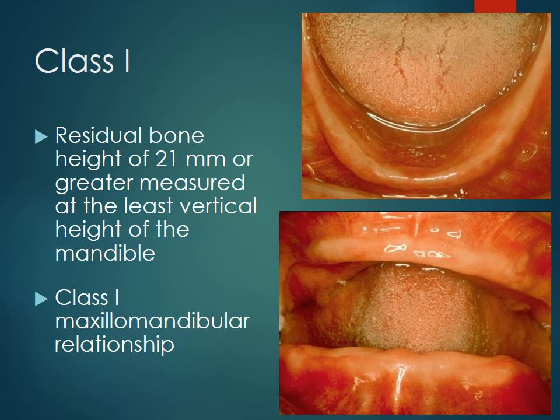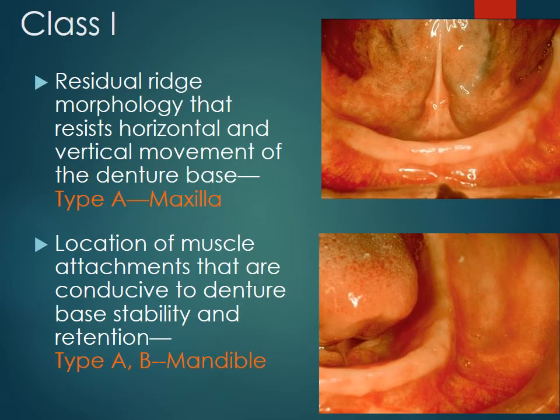In Class 1, we can see the residual bone height of 21 mm or greater measured at the least vertical height of the mandible, and the maxillomandibular relation is Class 1. The residual ridge morphology that resists horizontal and vertical movement of the denture base is Type A Maxilla. The location of muscle attachments conducive to denture base stability and retention are Type A or B of the mandible.